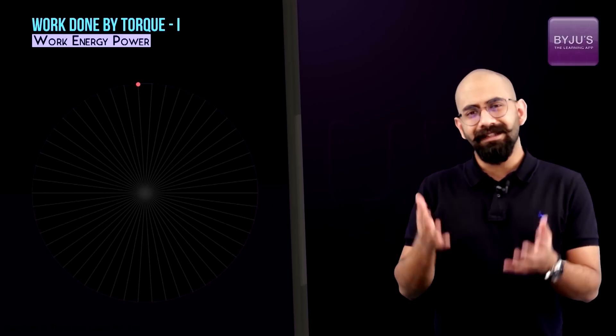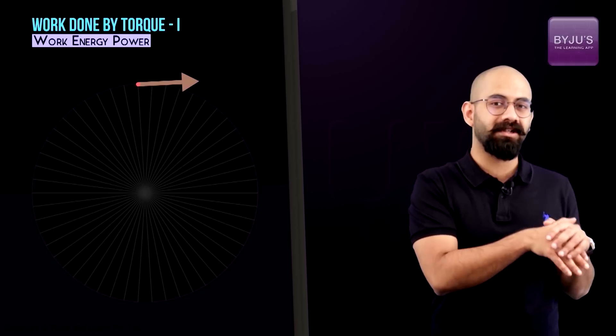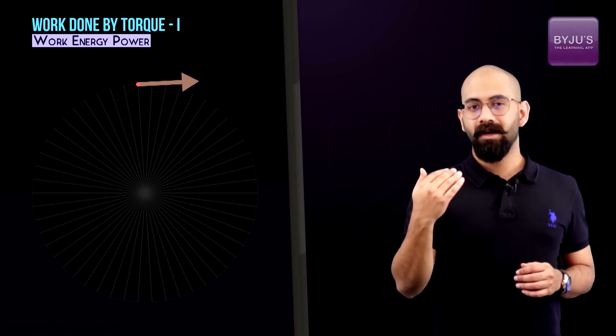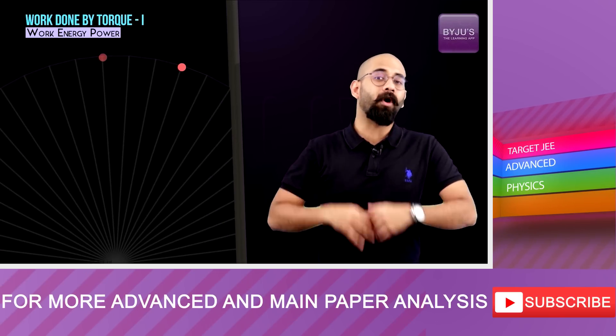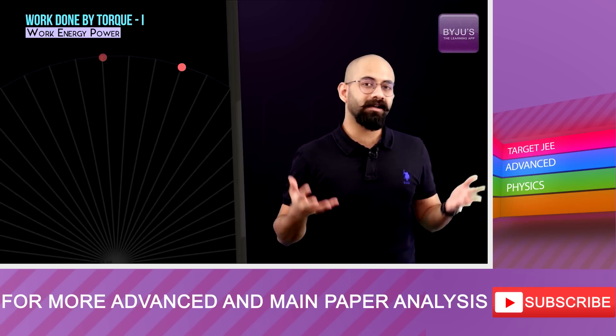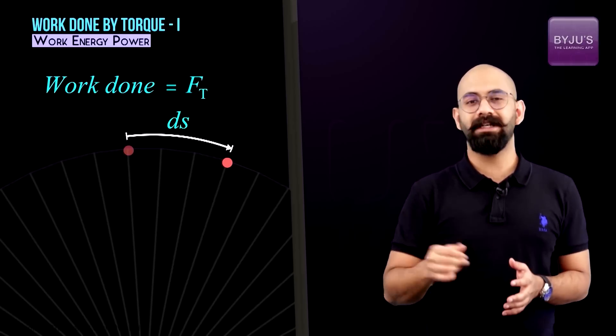The question is: what is the work done by this force Ft? Work done is the dot product of force and displacement — specifically the displacement of the point of application. This is a special case because the force is always tangential to the disc, so the point of application always moves in the direction of the force. Therefore, the work done equals Ft into ds, where ds is the overall distance traveled.